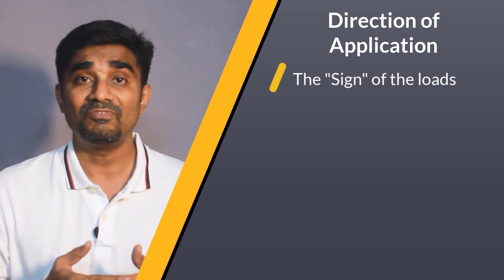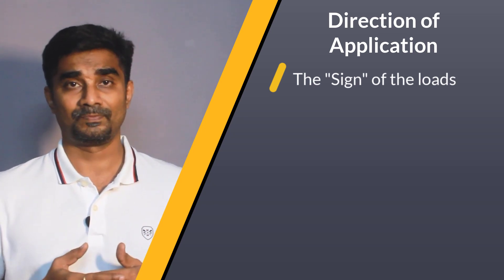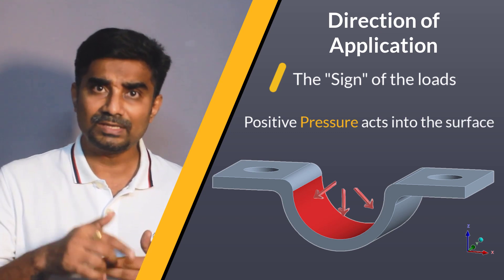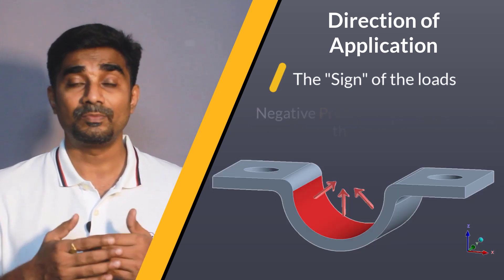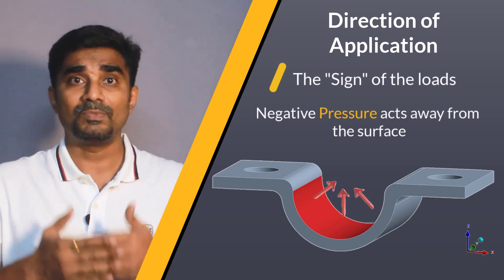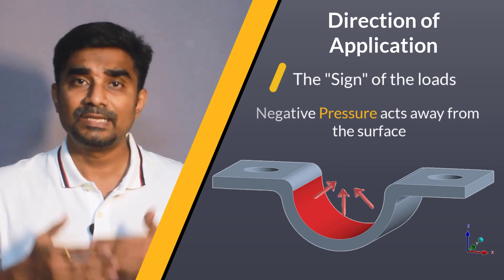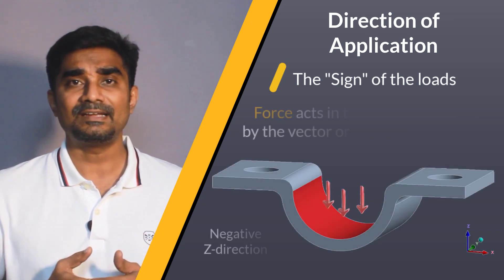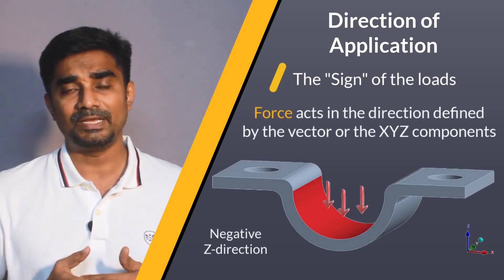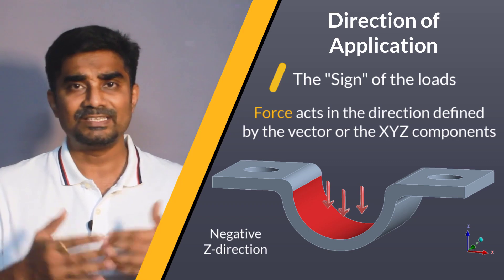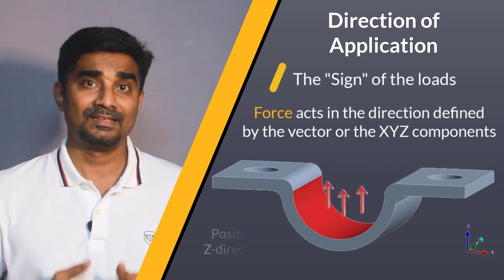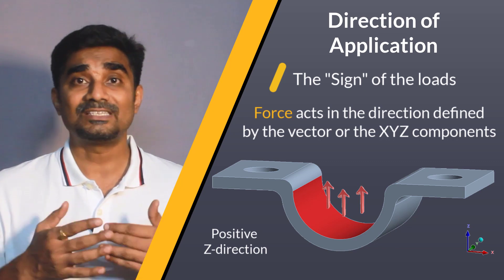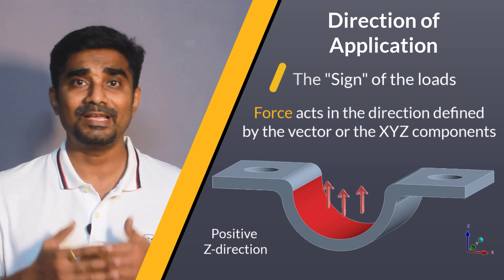Another important differentiating item between force and pressure is the meaning of the sign of the loads. When we apply pressure with a positive sign, it acts into the surface. Whereas for pressure acting away from the surface, we need to use a negative sign. But when using force, it acts as per the direction defined by the vector or the XYZ components. Hence, the sign is decided by the vector direction or XYZ component sign, and not by the surface normal.